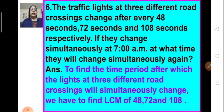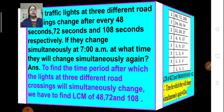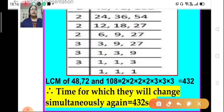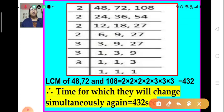First we have to find the time period after which the lights at different road crossings will change simultaneously. For that we have to find the LCM of 48, 72, and 108. We write them in a row and start dividing by the smallest prime number, 2. 2 divides 48 we get 24, it divides 72 we get 36, and 108 divided by 2 we get 54.